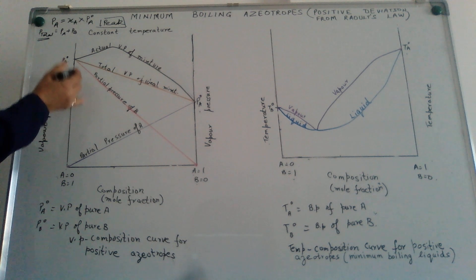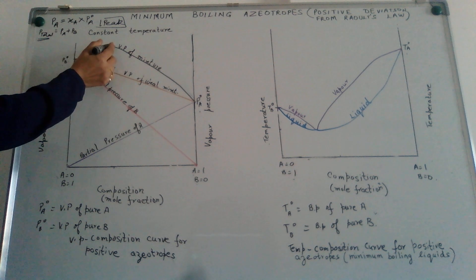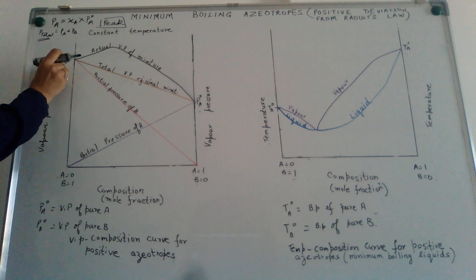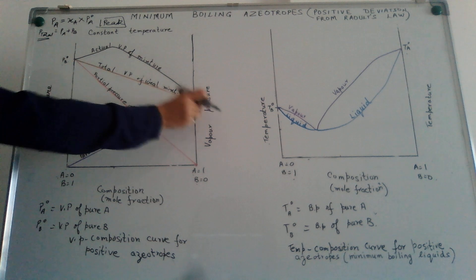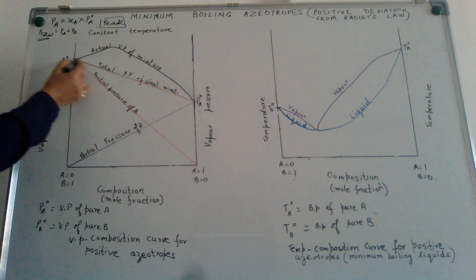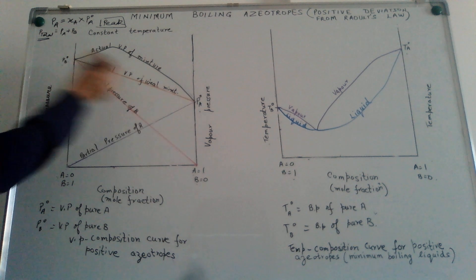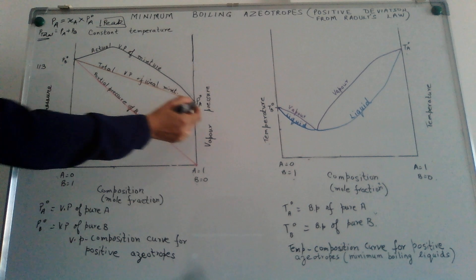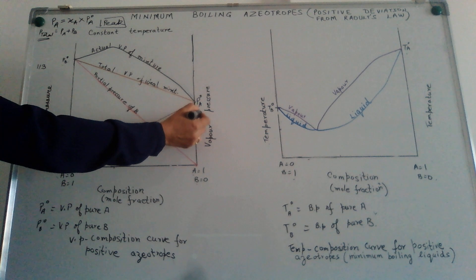Actually, what is observed is that the vapor pressure of the mixture becomes higher than the vapor pressure of each of the individual components when taken in their pure state. That means, ideally, this should be my vapor pressure. Let us suppose vapor pressure of pure B is 113 and vapor pressure of pure A is 84.